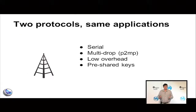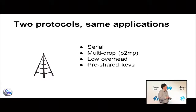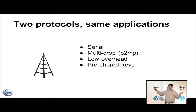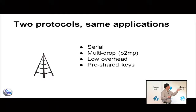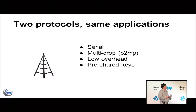I wanted to compare two protocols — one I'm very familiar with, one I had to learn about — for the same application. We have legacy comm infrastructure that's serial, has to accommodate multi-drops with a single master talking to many outstations, and has pretty low overhead because we've pretty much already saturated that link. And we want something cryptographic with shared secrets — a pre-shared key kind of scenario.